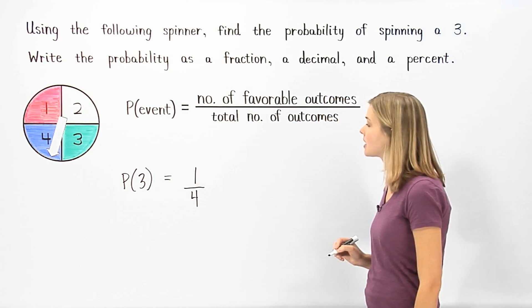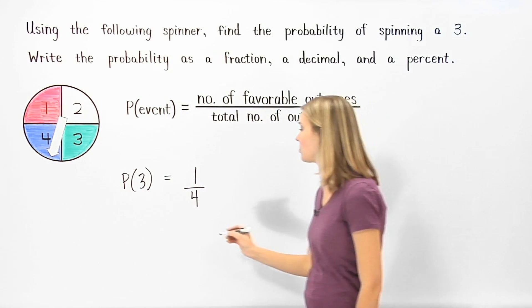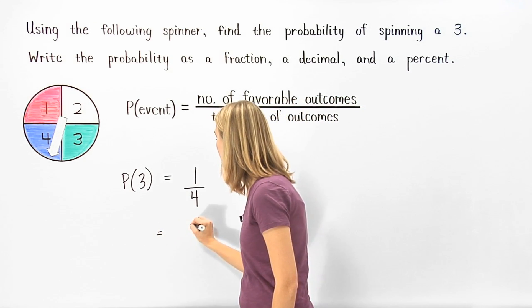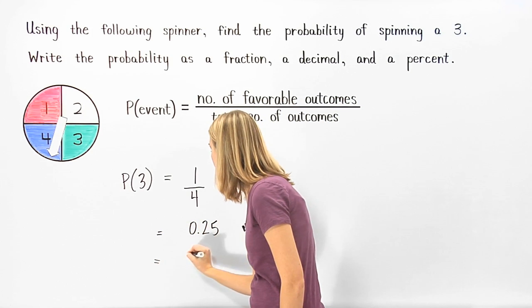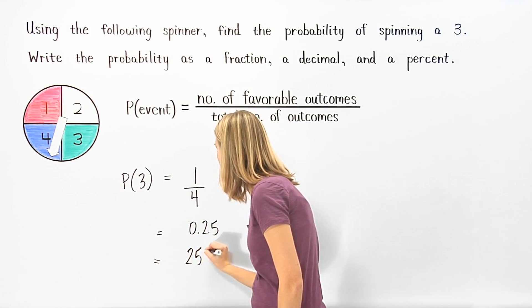So the probability of spinning a 3 is 1 fourth, which can be written as a decimal, 0.25, or as a percent, 25%.